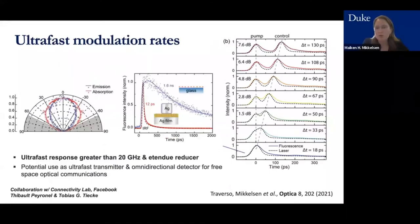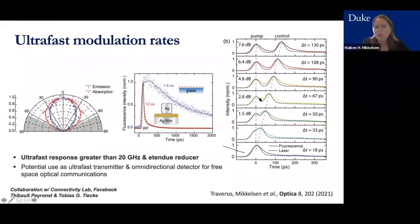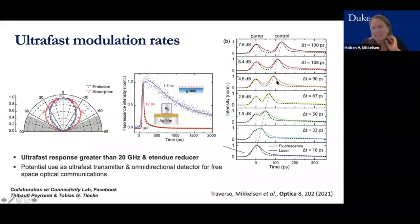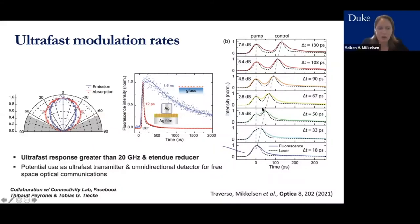For optical communications, modulating the signal quickly is critical since each light pulse carries information. We tested this with a pump pulse and a probe pulse arriving at a later time — splitting a single pulse into two at the same wavelength. The dashed line shows the shape of the two laser pulses and the colored line shows how our fluorescence follows those pulses very closely, giving an ultrafast response.